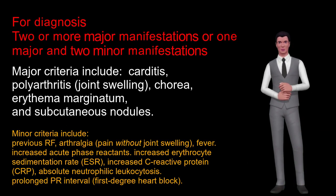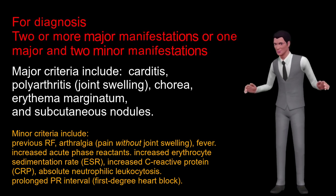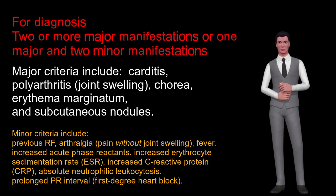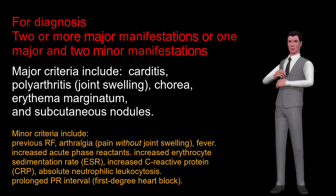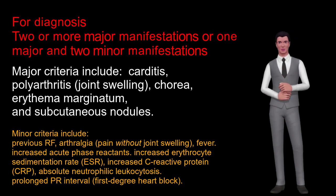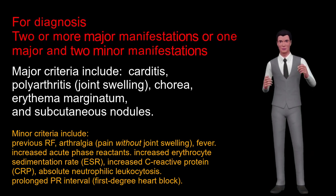Minor criteria include previous RF, arthralgia (pain without joint swelling), fever, increased acute phase reactants — including increased erythrocyte sedimentation rate (ESR) and increased C-reactive protein (CRP) — absolute neutrophilic leukocytosis, and prolonged PR interval (first degree heart block).